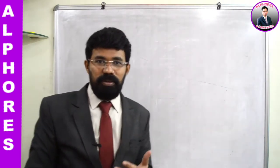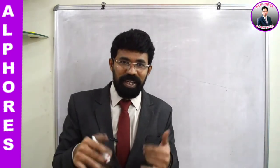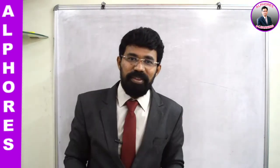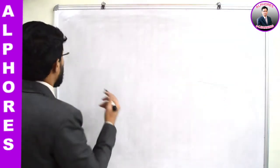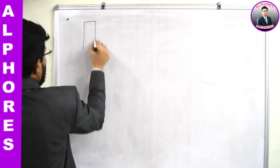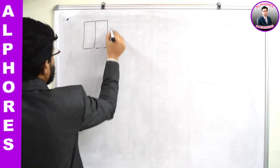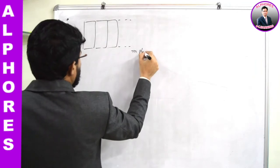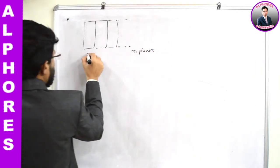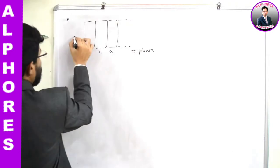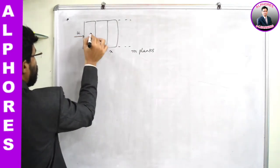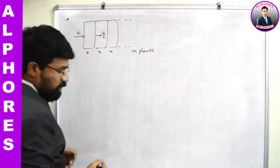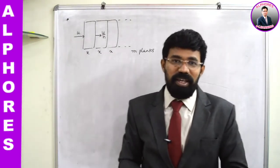Now, what happens if a bullet's velocity becomes 1/nth — that is, the velocity reduces to 1/n rather than by 1/n? I will use a pile of m planks. Each plank has thickness x. Initial velocity is u. When it passes through the first plank, velocity has become u/n.